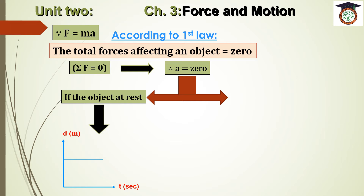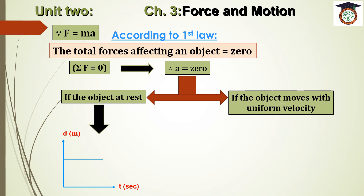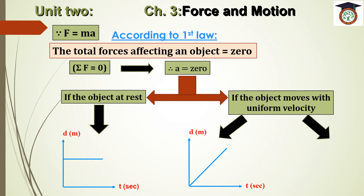This graph represents Newton's First Law because the object is at rest with no acceleration. The second way to represent Newton's First Law is if the object moves with uniform velocity. In this case, the distance-time graph is a straight line passing through the origin point, and the velocity-time graph is a straight line parallel to the time axis.